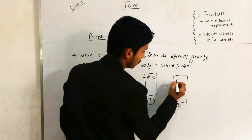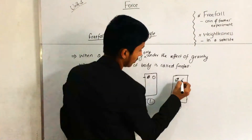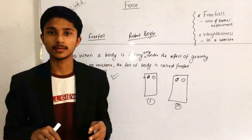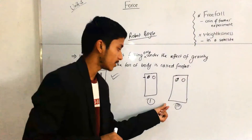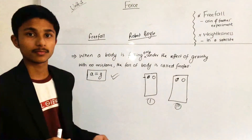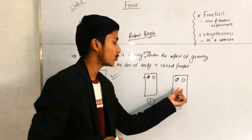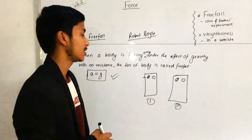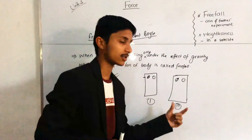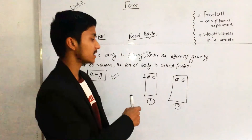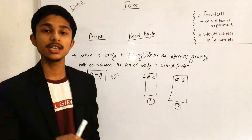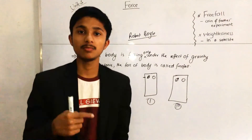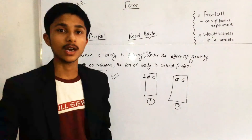He performed the same experiment again in the vacuum jar, dropping the feather and coin at the same time. He found an astonishing result: the feather and coin fell at exactly the same time. As a conclusion, he found that the acceleration of a freely falling body is independent of its mass, confirming that Galileo's statement was true.